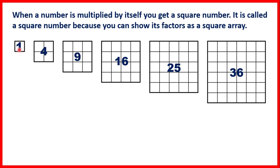So the numbers one, four, nine, sixteen, twenty-five and thirty-six are all square numbers. And we have a special symbol for squared. One squared is one because one times one is one. This little two means squared, and that means multiply the number by itself.